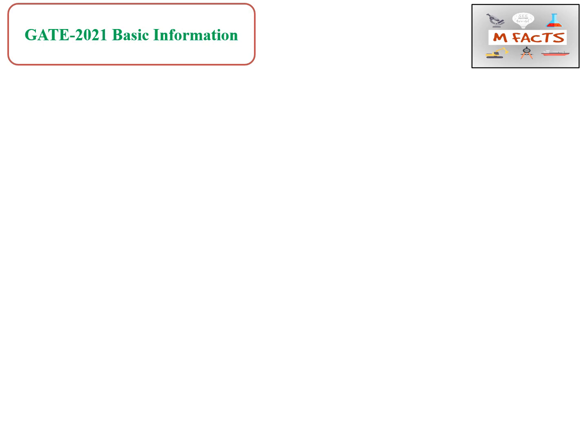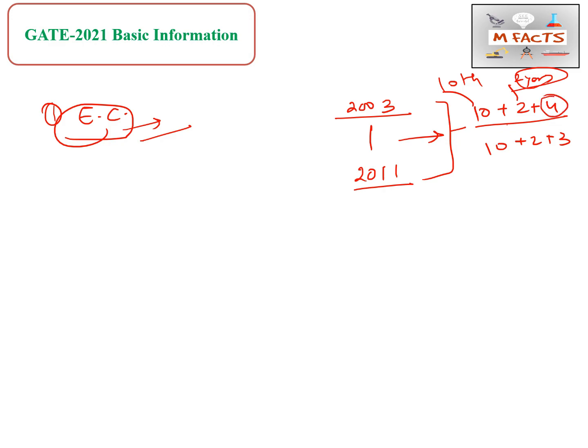One more change is related to the eligibility criteria to sit in the examination. Now this exam is also for third-year students. Third-year students of undergraduate degree can sit in this exam and write their exam. From 2003 to 2011, they gave the opportunity to third-year students also. The meaning of 10 plus 2 plus 4 is 10th class, 12th class or two-year diploma, and four is for B.Tech final year, the fourth year.